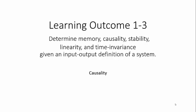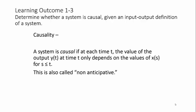This video is for the subproperty causality. Let's start with the definition. Causality: A system is causal if at each time t, the value of the output y(t) at time t only depends on the values of x(s) for times s less than or equal to t. This is also called non-anticipative.